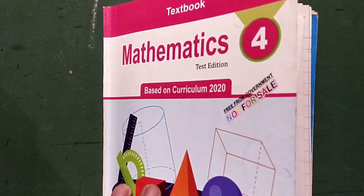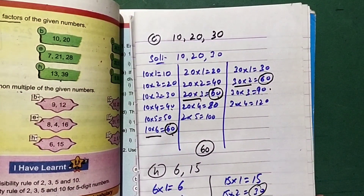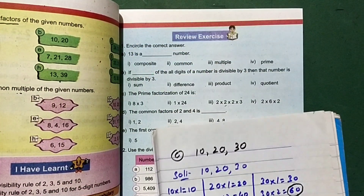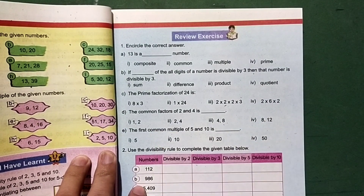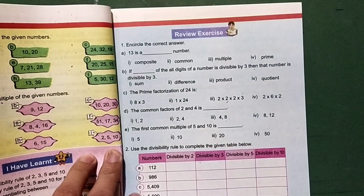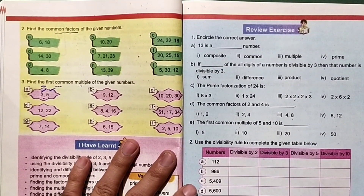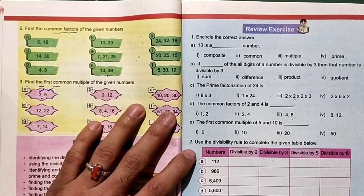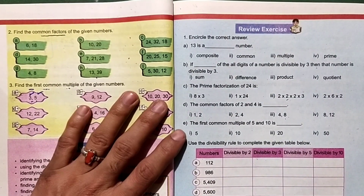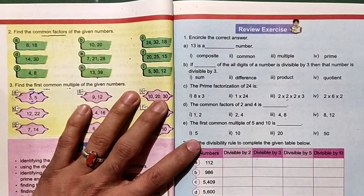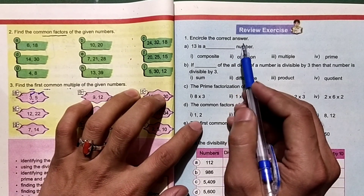My name is Rahman al-Rahim. Grade 4 Mathematics, Unit 2, Review Exercise. We will encircle the correct answer.